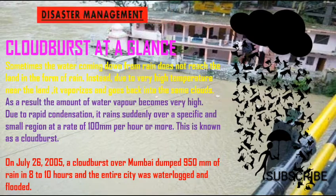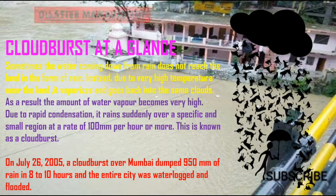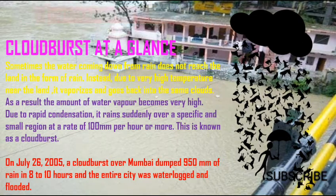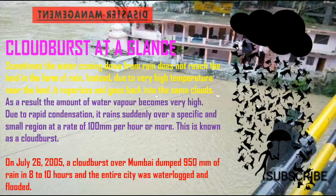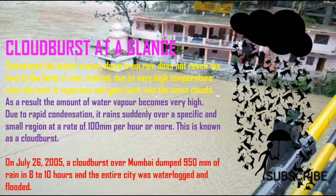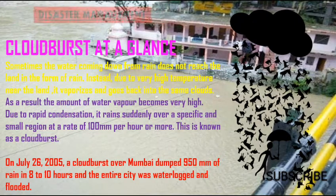Sometimes the water coming down from rain clouds does not reach the land in the form of rain. Instead, due to very high temperature near the land, it vaporizes and goes back into the same clouds. As a result, the amount of water vapor in those clouds becomes very high, and due to rapid condensation, it rains suddenly over a specific and small region at a rate of 100 millimeters per hour or more. This is known as a cloudburst.